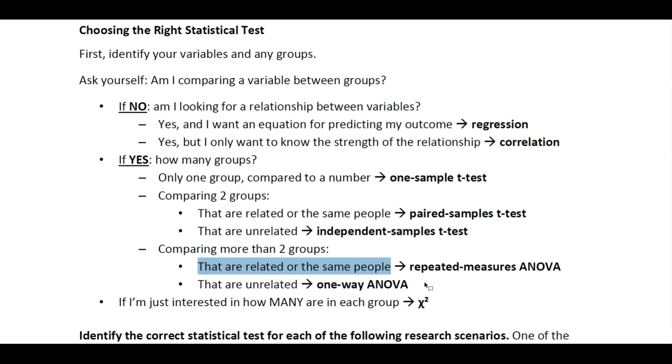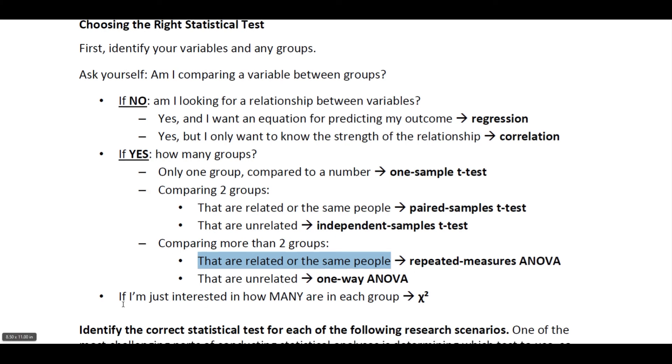But you may, if you go on to an advanced statistics class, you are likely to learn about, for example, factorial ANOVA or possibly ANCOVA or MANOVA. Now, if you are simply interested in how many are in each group and whether those counts are consistent with some expected counts, then that's the scenario where we're going to use a chi-squared test.